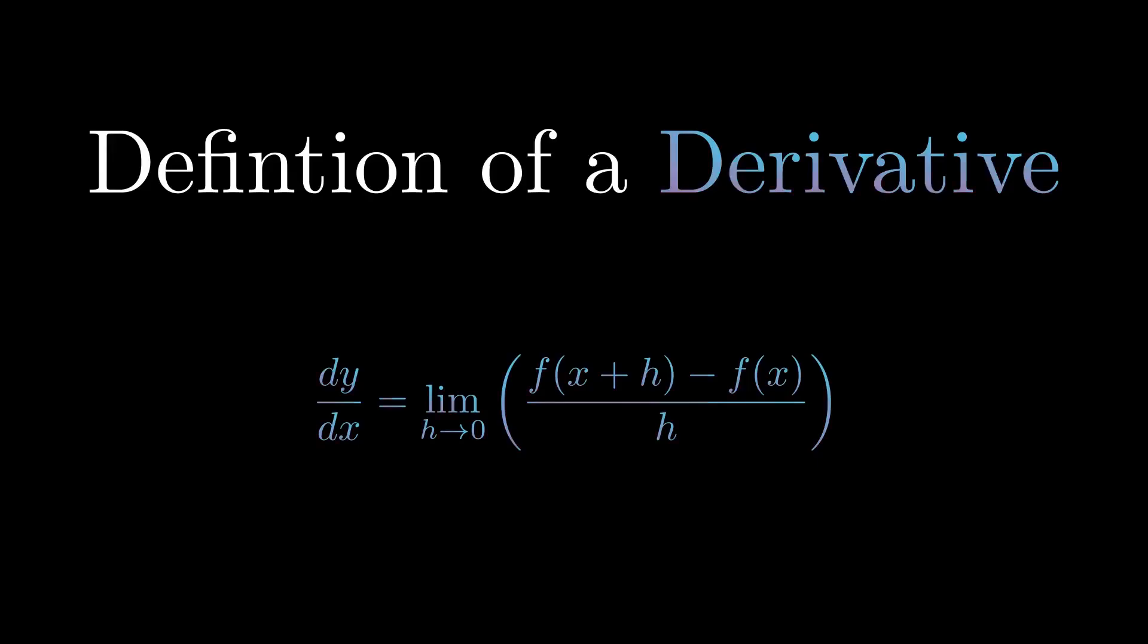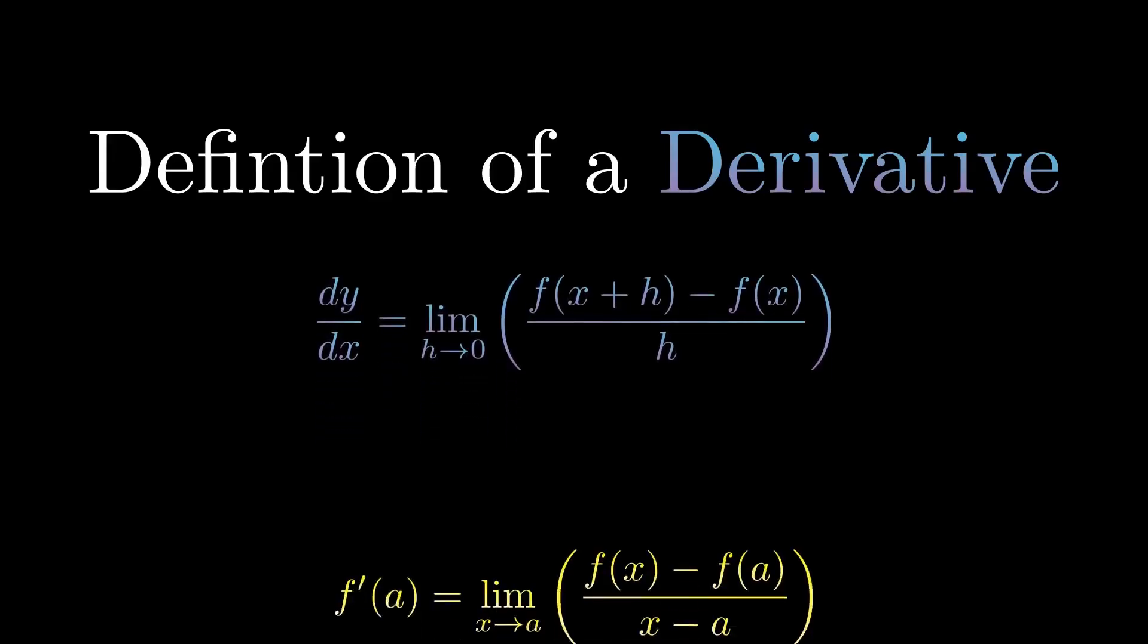What it's saying is that the slope of the function at a point is just the slope between two points, one being the point itself and the other being a point that gets infinitely close. If you're more used to the y2 minus y1 over x2 minus x1 interpretation of the slope, there's also this definition of a derivative.